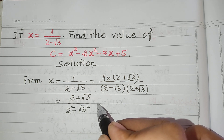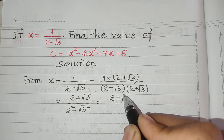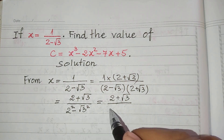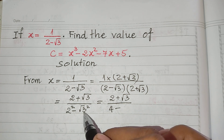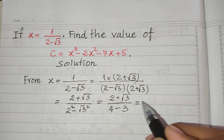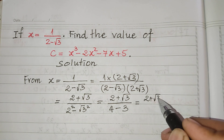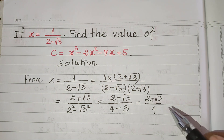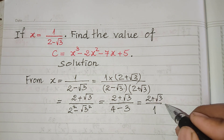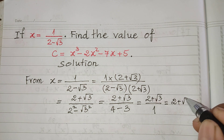And it equals 2 plus square root 3, divided by 4 minus 3. And it equals 2 plus square root 3 divided by 1. Since the denominator equals 1, we don't write it. So h equals 2 plus square root 3.